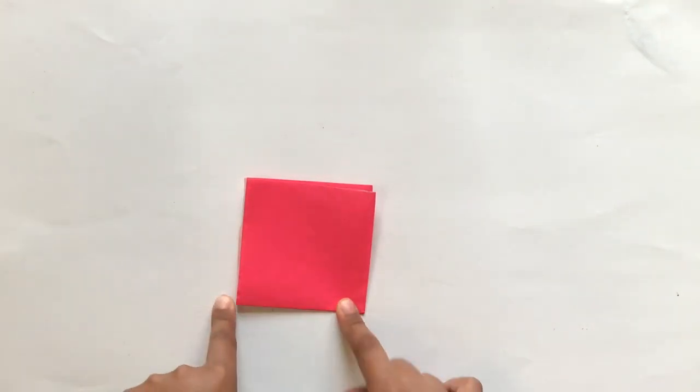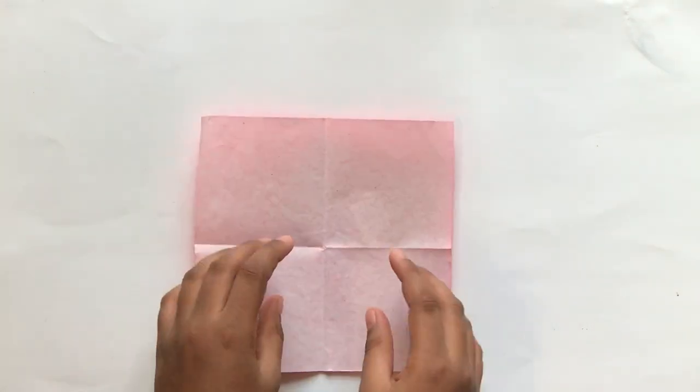Now, fold it into half and make the crease. Now, we are gonna fold it into half again. We have the crease and now I am gonna cut it. I have the paper cuttings.